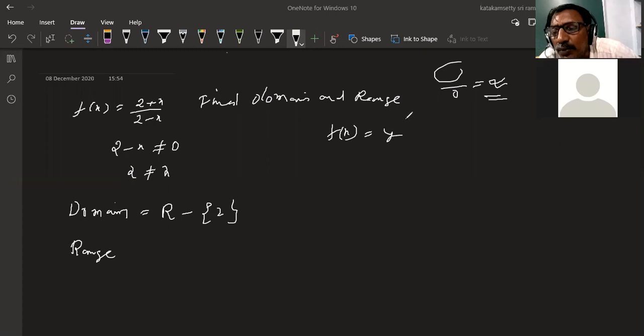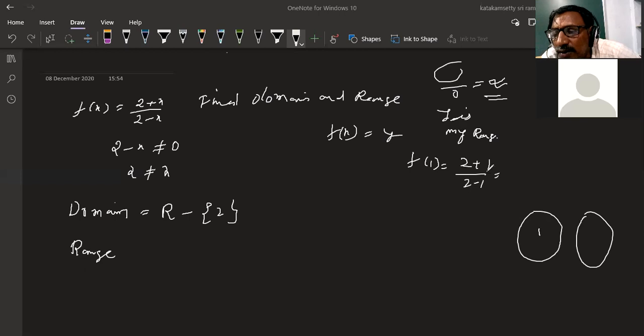Y is my range. For example, f of 0 equals 2 times 0 plus 1 over 2 minus 0, which equals 1 over 2. That means 1/2 is in my range.